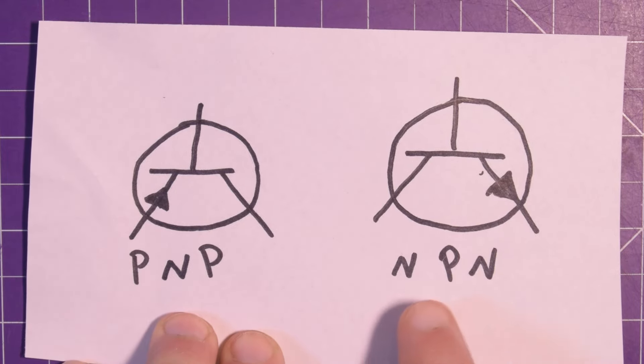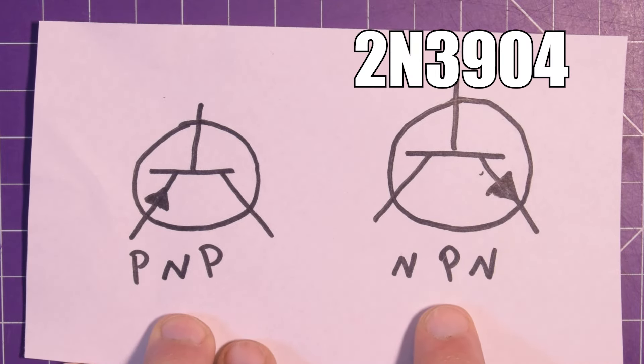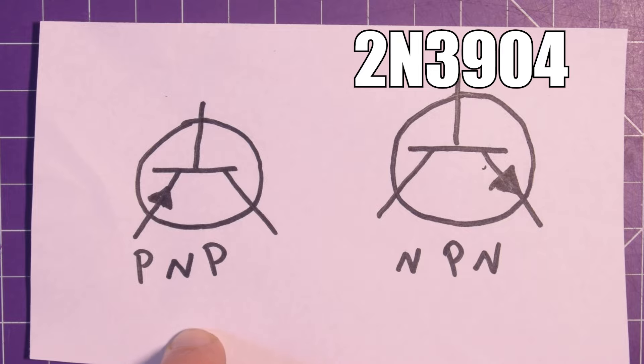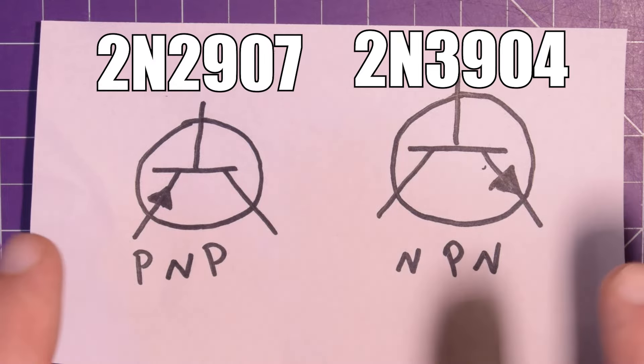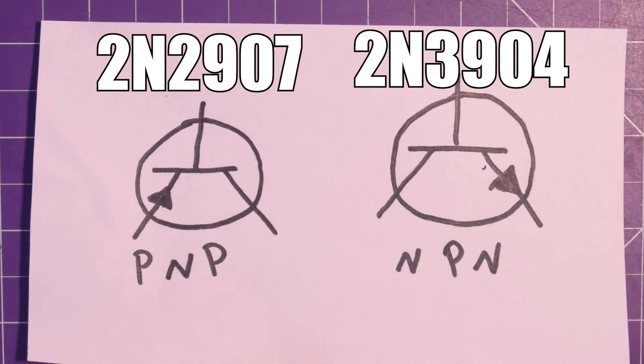For NPN transistors I personally have 2N3904s, and for PNP transistors I have 2N2907 transistors. Pretty much any general purpose NPN and PNP transistor will do.